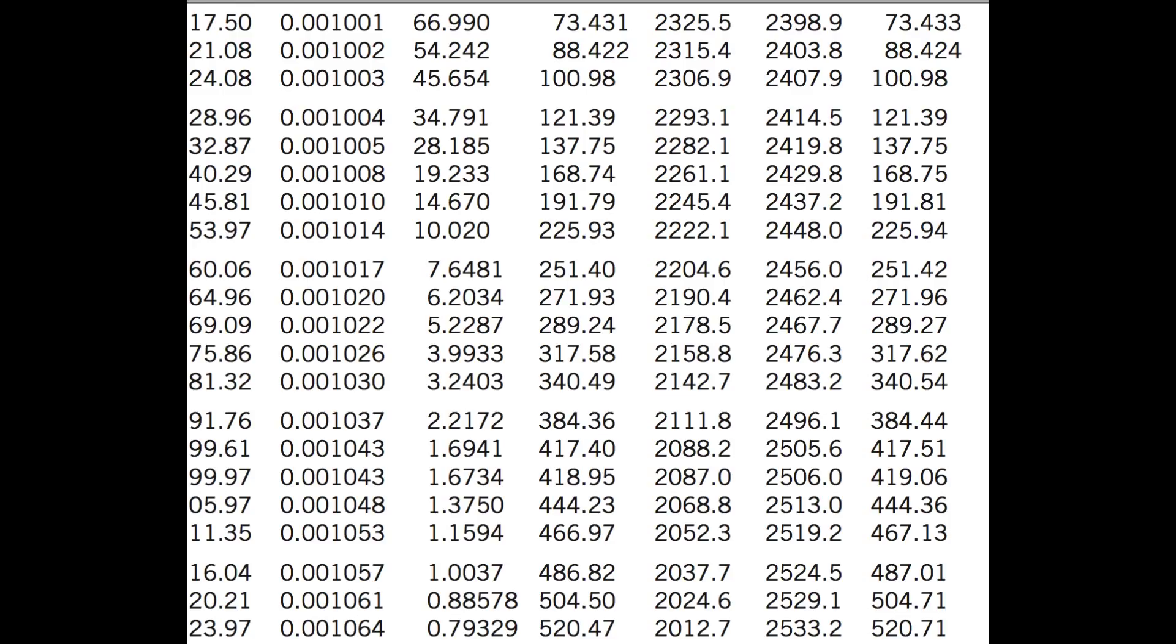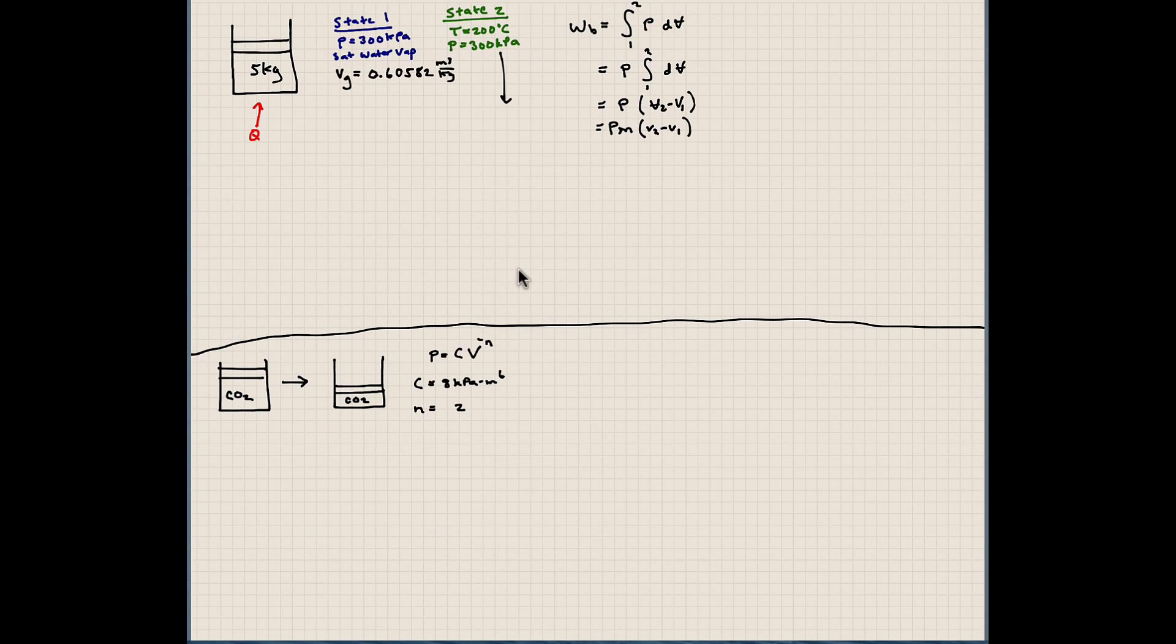Now, what about at state 2? Let's refresh our memory here of what we're talking about for state 2. So here's the new information I added while I had the page swapped. We know that the specific volume is this. Now let me add some information over here. We know the temperature is 200 degrees Celsius, and the pressure is 300 kilopascals.